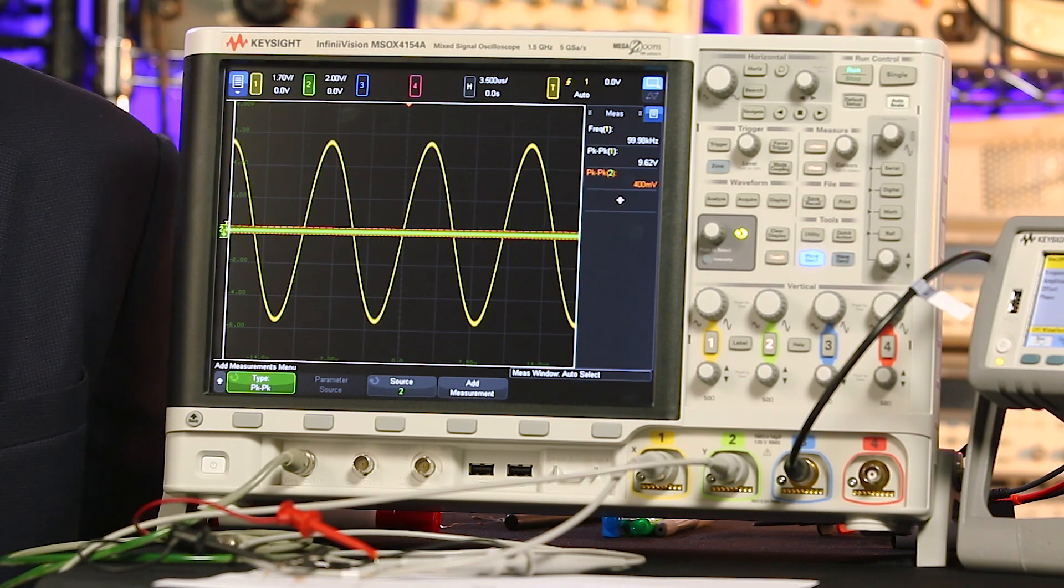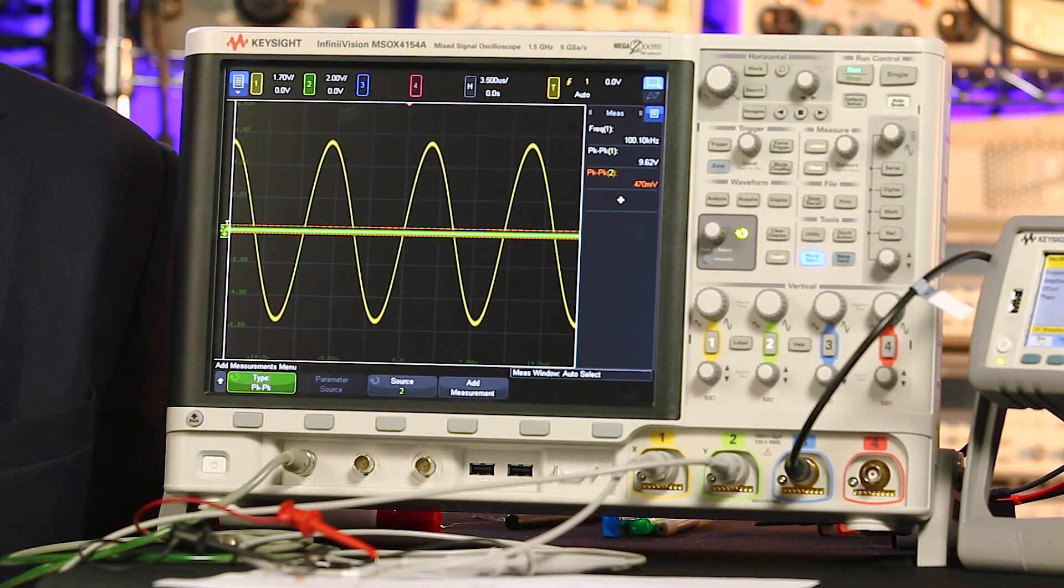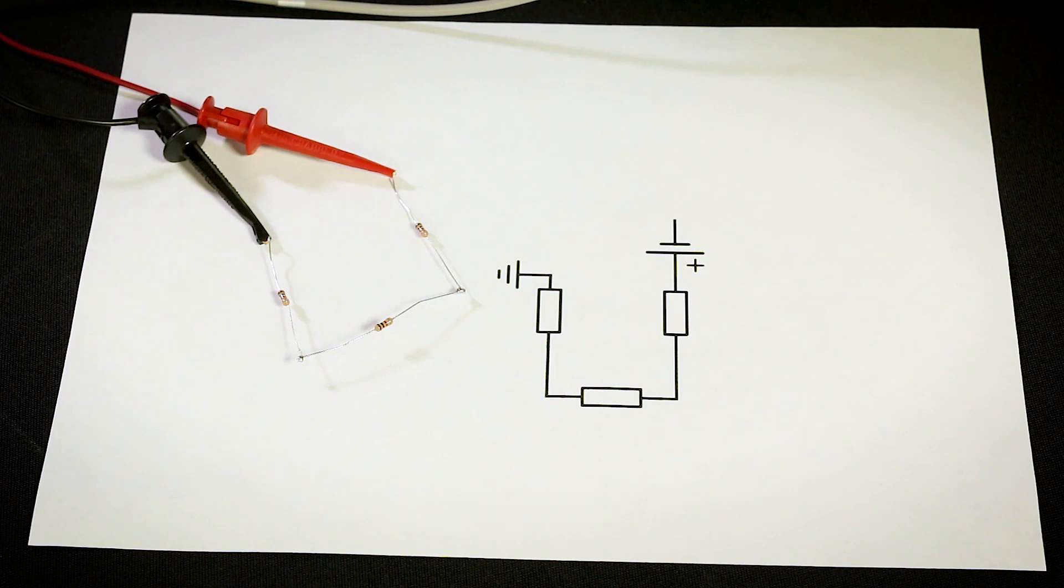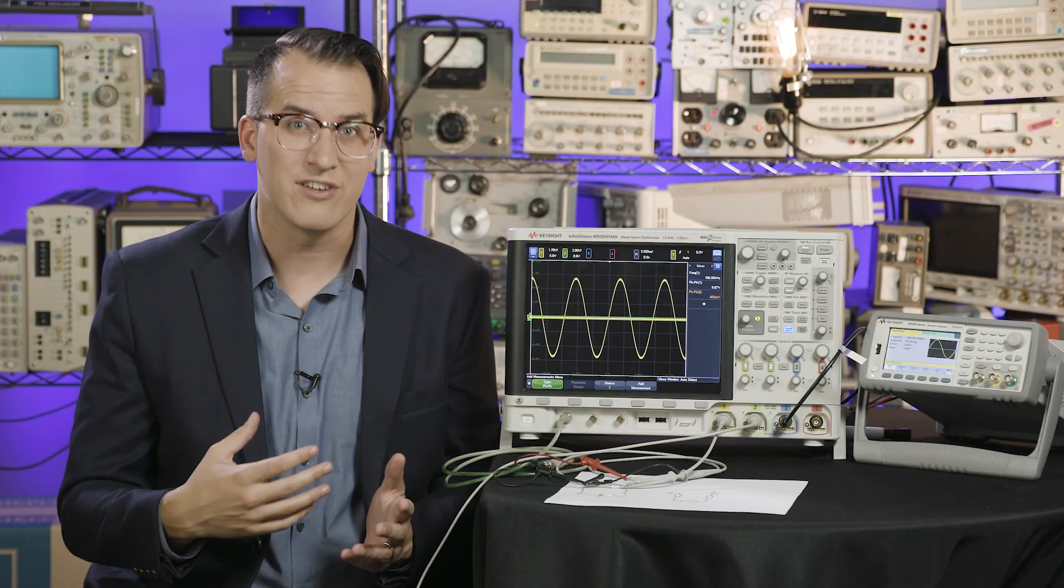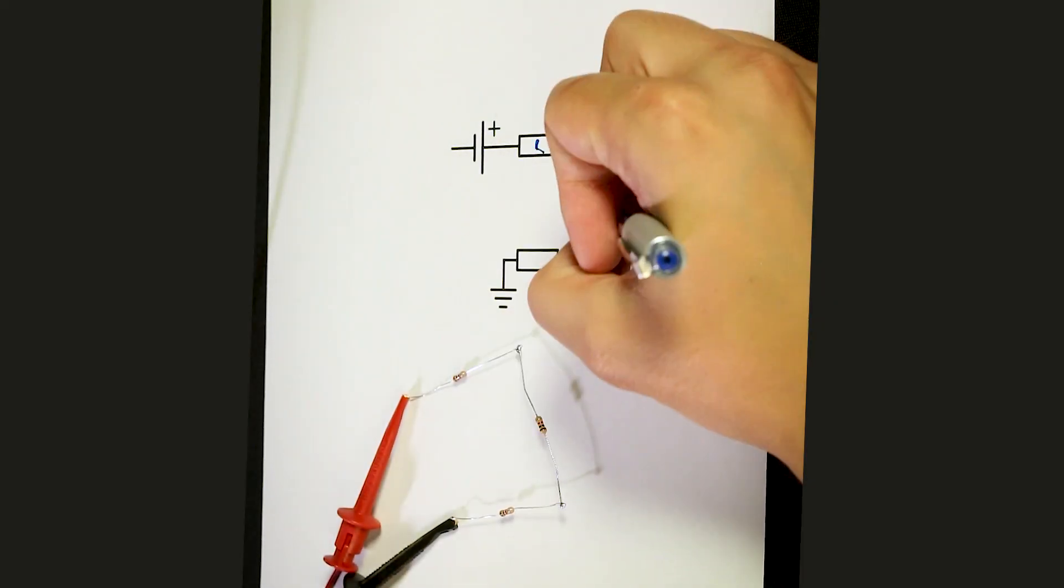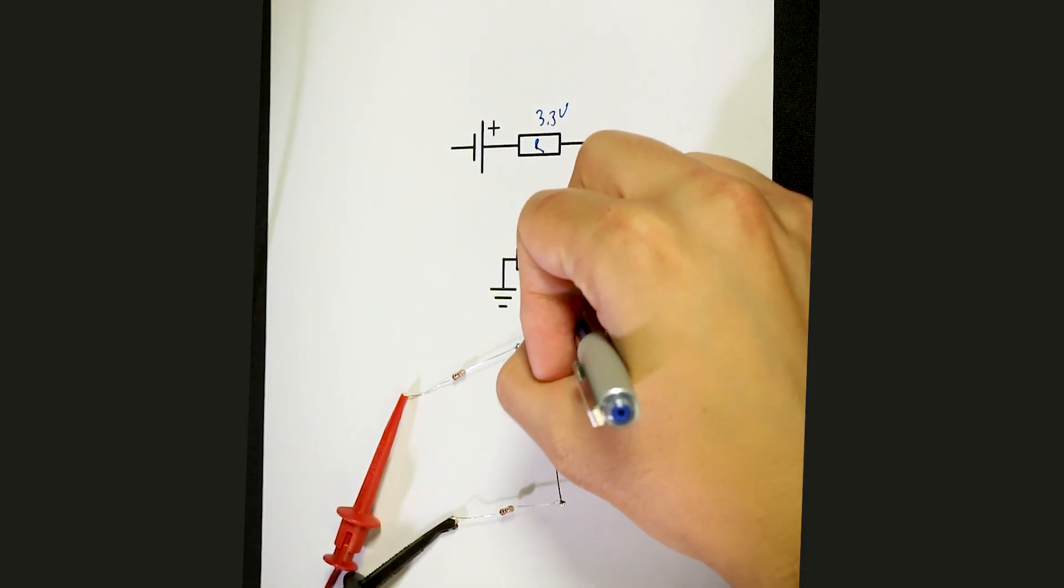On channel one, I'm showing the 10-volt sine wave that is applied to three identical resistors in series. This is a tightly controlled setup. We know the applied voltage and the value of these resistors, so it's easy to calculate the voltage across each of these resistors.